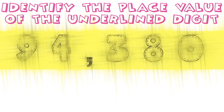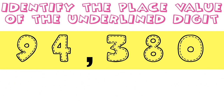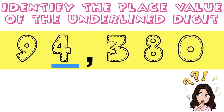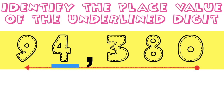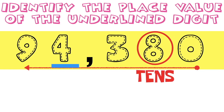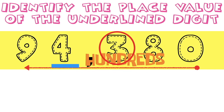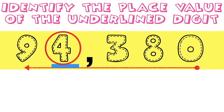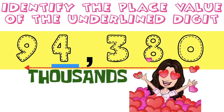How about if we have 94,380? What is the place value of digit 4? Always remember, in identifying the place value, you are going to start from the rightmost digit going to the leftmost digit. Digit 0 is ones. Digit 8 is tens. Digit 3 is hundreds. So how about digit 4, children? Can I hear your voice? Louder! Digit 4 is... thousands! Very good!